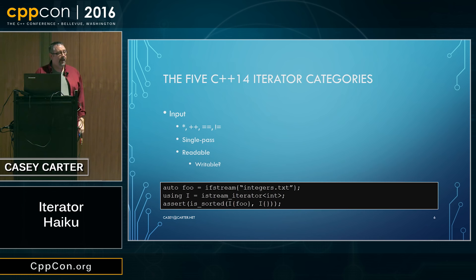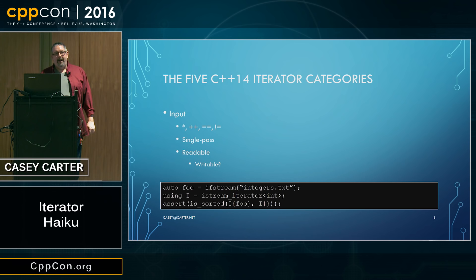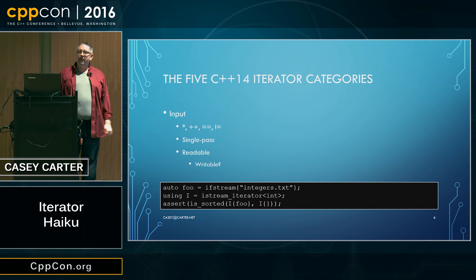The fact that they're required to be readable doesn't mean they're not necessarily writable. I might have a writable input iterator that's single-pass and that I can read and write the values of — they might be mutable. The classic example is an istream iterator that you may be familiar with. I can use an istream iterator to iterate over a range of values in an input stream.